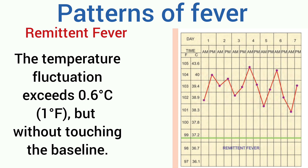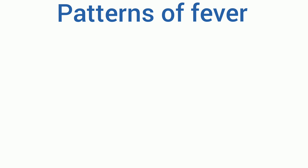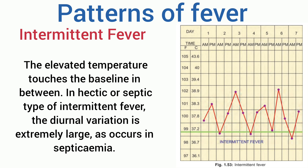Remittent fever: the fever fluctuation exceeds 0.6°C (1°F) but without touching the baseline. Intermittent fever: the elevated temperature touches the baseline in between. In hectic or septic type of intermittent fever, the diurnal variation is extremely large, as occurs in septicemia.